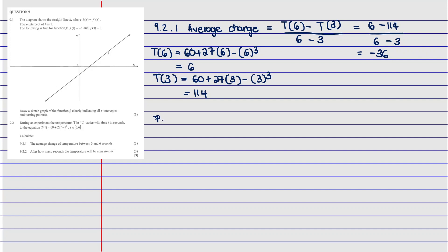Now we move to question 9.2.2. It says: after how many seconds will the temperature be at its maximum? To find this, we rearrange the equation. We see that T(t) = −t³ + 27t + 60, so the leading coefficient a equals negative one, which is less than zero.